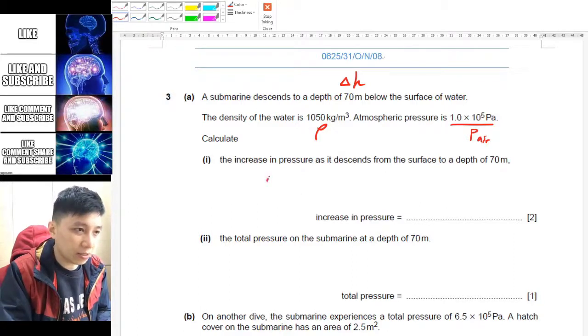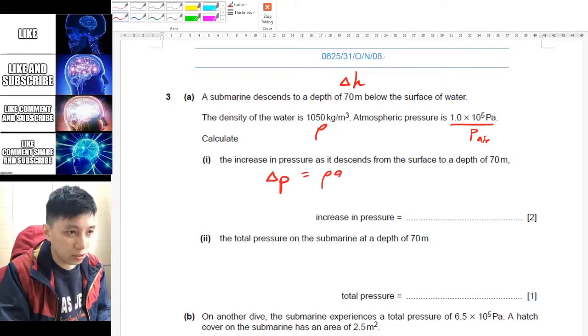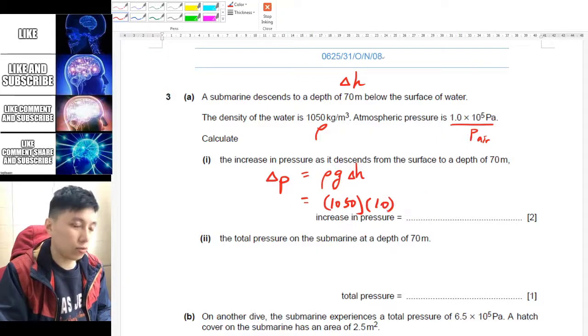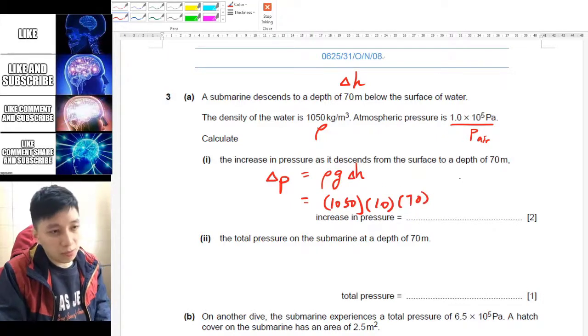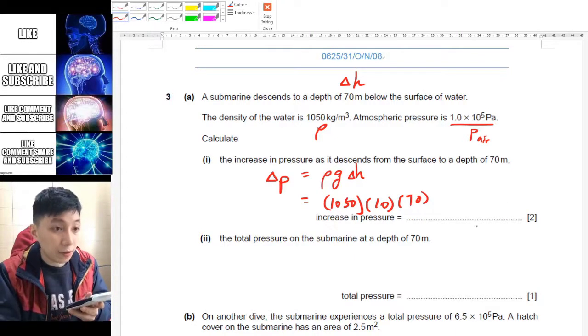So I don't know whether we have to use that first. It said increase in pressure as it descends, so I think that is simply delta P because when you say increase in pressure that means the change of pressure. So we're using simply the equation ρg delta h, and so that should simply equal to this ρ, g is not given but in the exam setting is given as 10 in IGCSE, so 10, delta h is 70, so just multiply them together and you should get 735000 pascals. So that's part 1.